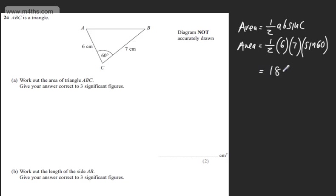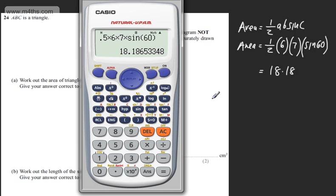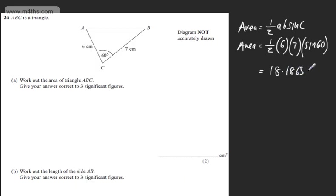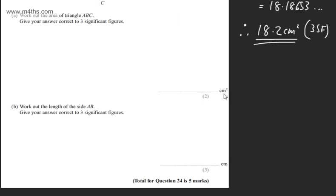Let's write this in, 18.18. And then what did we have after that? 65, let's write this in, 653... Therefore, we can say that this is going to be 18.2 cm squared to three significant figures. So I'm expected to round it. The third significant figure is the one. We can see that eight is greater, so we round up. So two marks in part A.